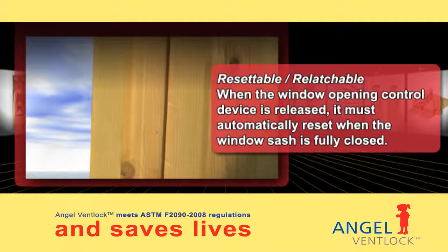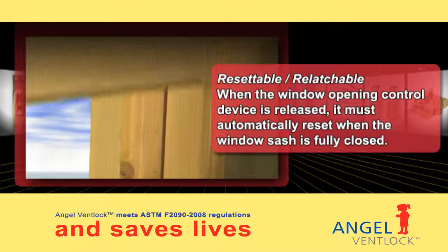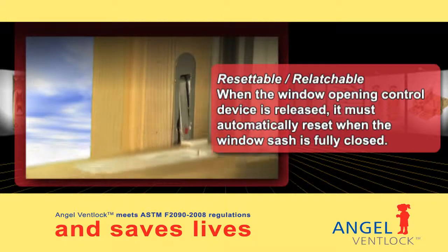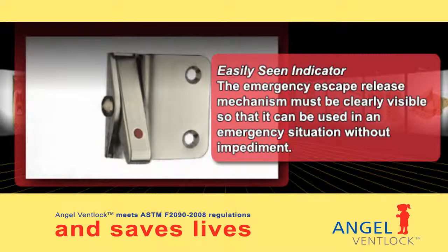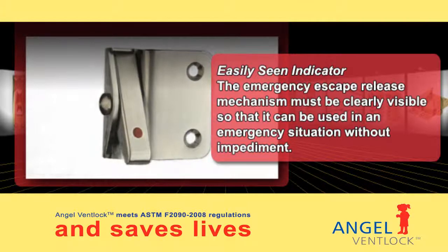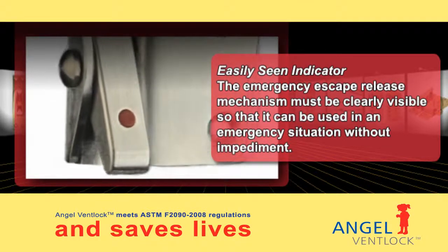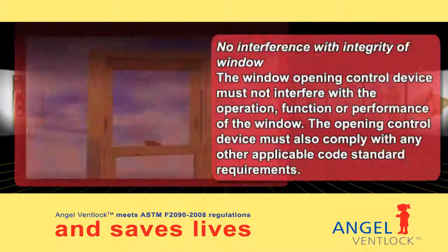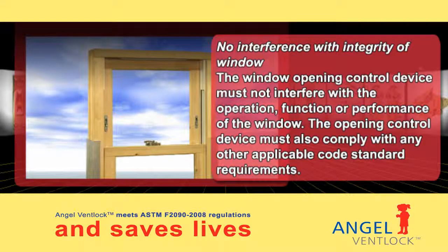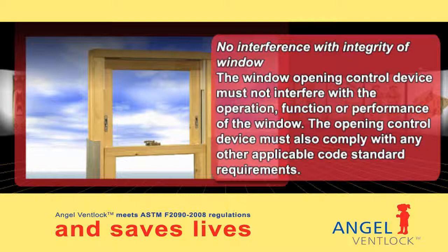When the window opening control device is released, it must automatically reset when the window sash is fully closed. The emergency escape release mechanism must be clearly visible so that it can be used in an emergency situation without impediment. The window opening control device must not interfere with the operation, function or performance of the window, and must also comply with any other applicable code standard requirements.